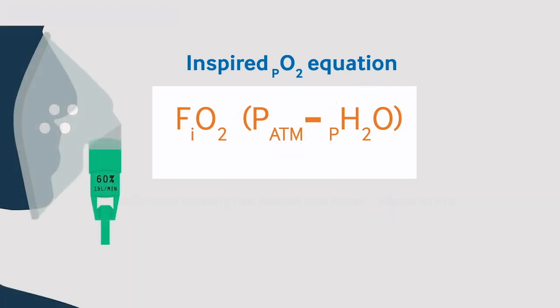Take an example of a patient on 60% oxygen via a Venturi mask. Their inspired oxygen concentration can be calculated by taking the FiO2, which in this case is 60%, or 0.6 as a decimal. Then multiply this by 101, the atmospheric pressure at sea level, minus 6.25, the partial pressure of water at sea level. This gives the inspired PO2 to be 56.85 kPa.